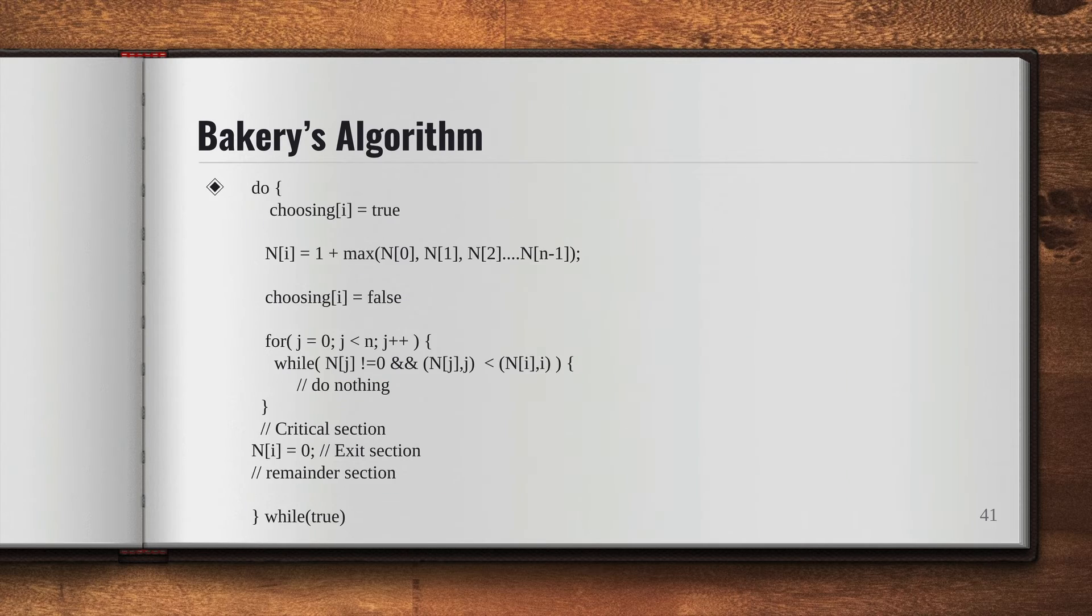So let me show you the code snippet for how this works. You can see it says do while it's true, and then you have choosing. So let me explain these. Let's say there's a process Pi that needs to enter the critical section. Here's your critical section.